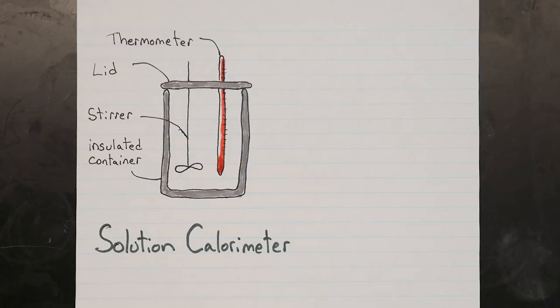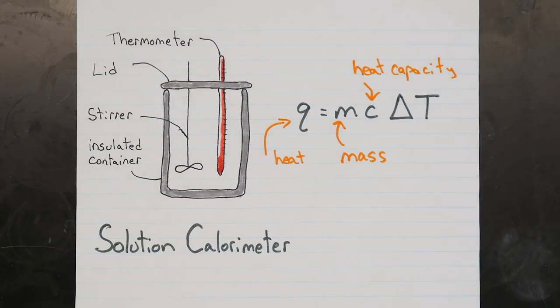Basically, we just need to keep track of the temperature of whatever process is going on inside the calorimeter, and remember that the heat energy released is equal to mc delta t, where m is the mass, c is the heat capacity, and delta t is the amount the temperature changed.